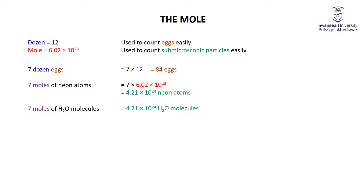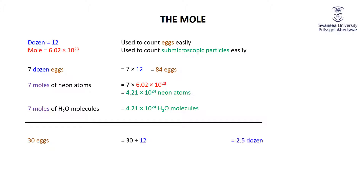Let's make the math a little bit harder. Instead of going from dozens to number of eggs, let's say I've got 30 eggs — how many dozen is that? You'd quickly say: 30 eggs divided by 12 is two and a half dozen. Same idea: if I've got 8.14×10²³ HCl molecules, how do I turn it into moles? I know the number of molecules and I want the number of moles, so I divide that by 6.02×10²³ to find that's 1.35 moles of HCl.